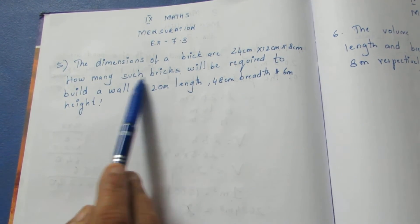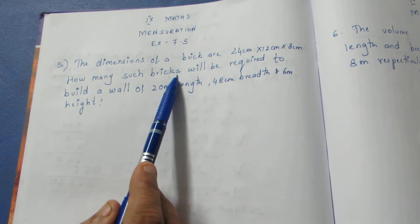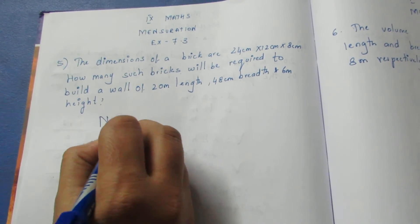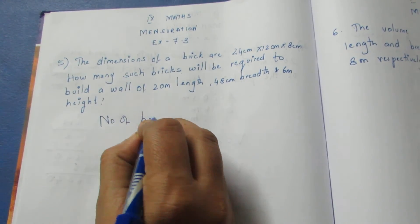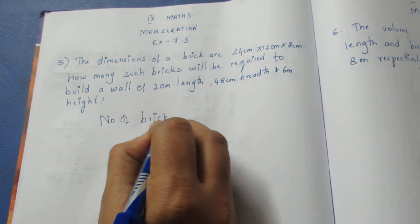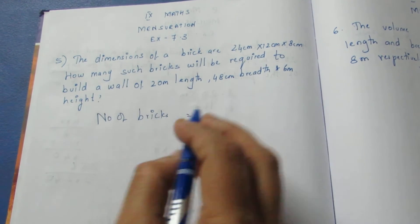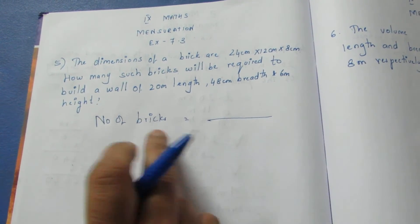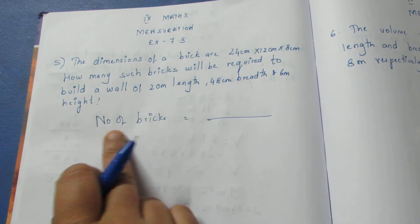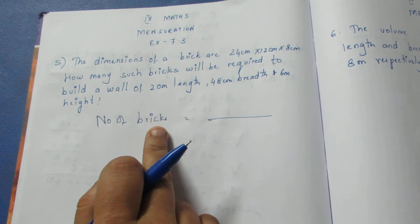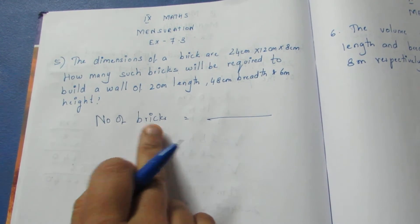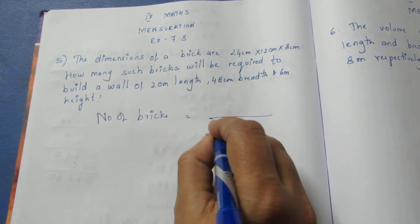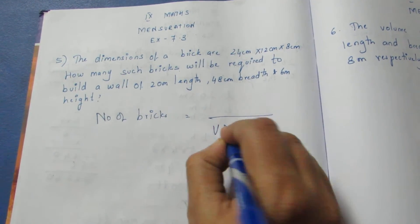So, how many bricks are required? The number of bricks depends on the volume. The volume of the wall divided by the volume of one brick gives the number of bricks.